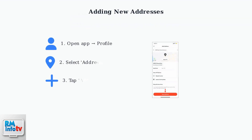To add a new address, start by opening the DoorDash app and tapping your profile icon. Then select Addresses from your account settings and tap Add Address.